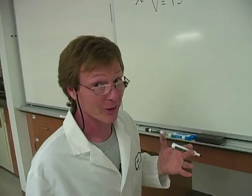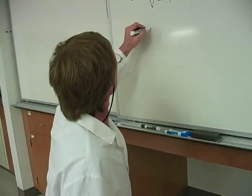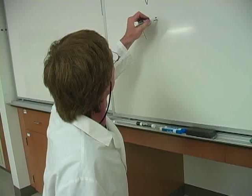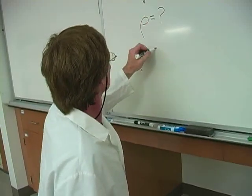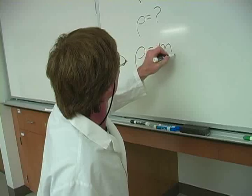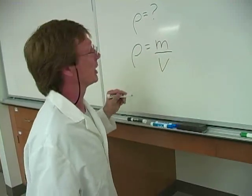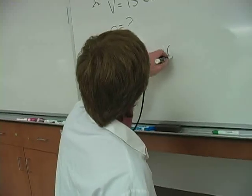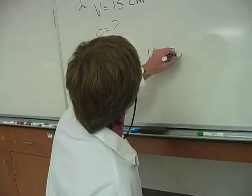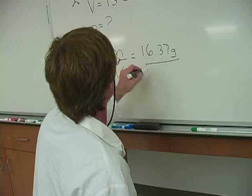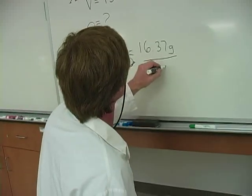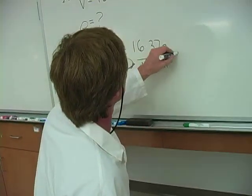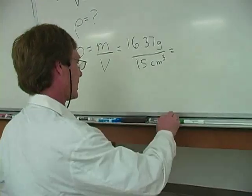Now, what I want to know is, what's the mass density? Well, the mass density is the mass per volume. That was my working equation. And that's equal to 16.37 grams divided by 15 centimeters cubed. And if I pull out my calculator, 16.37.